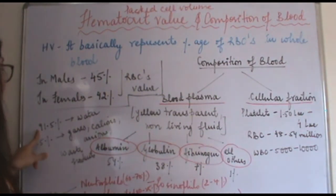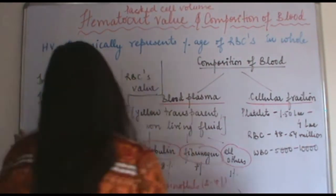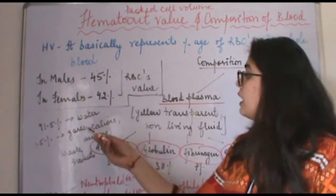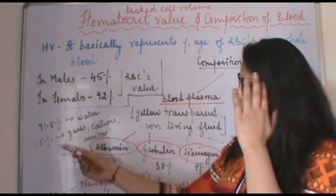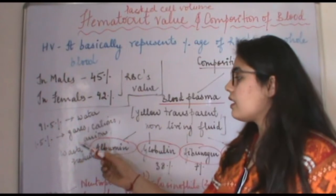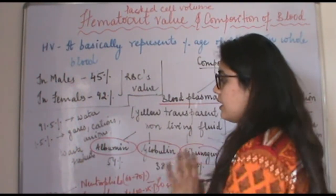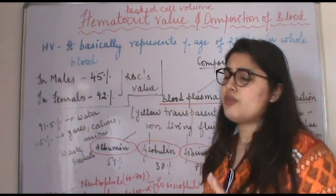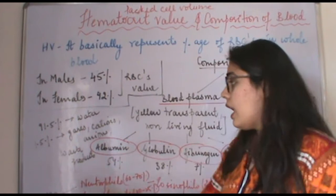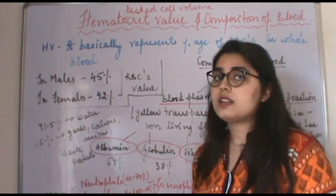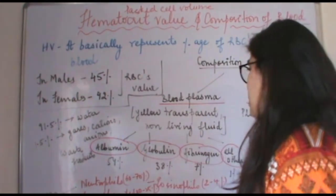In addition to proteins, 91.5% of blood plasma is water, and the remaining 1.5% consists of gases, cations, anions, and waste products. So waste products are also present inside the plasma.